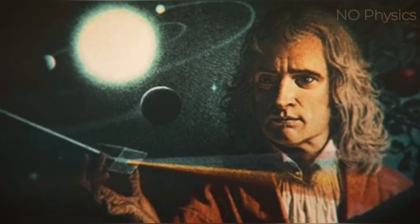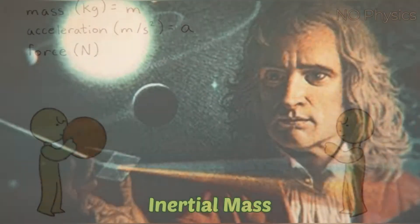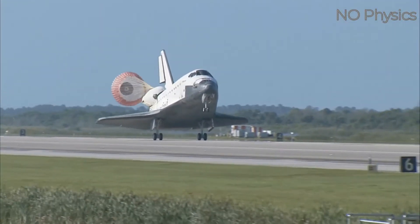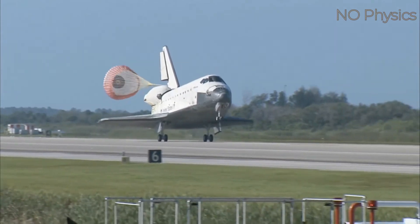Newton defined two kinds of mass. One was inertial mass, which is described by Newton's second law of motion. Inertial mass is defined by the force it requires to accelerate an object.